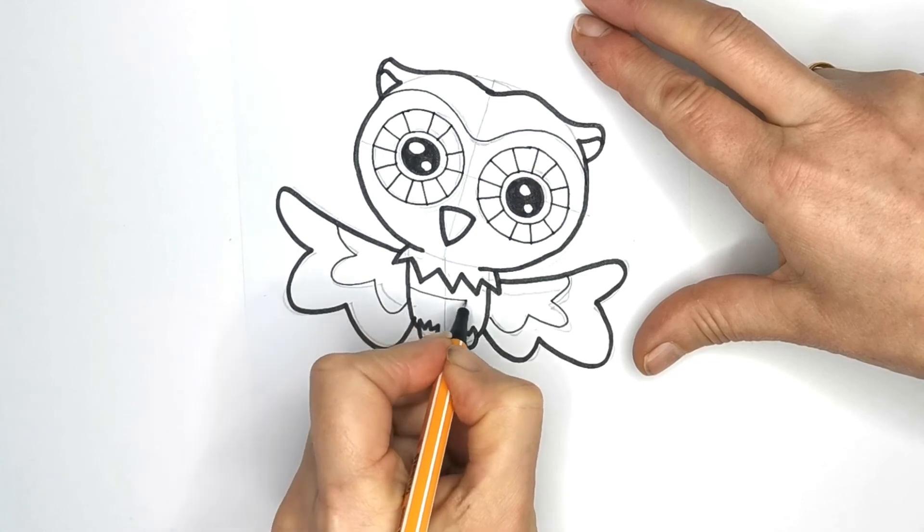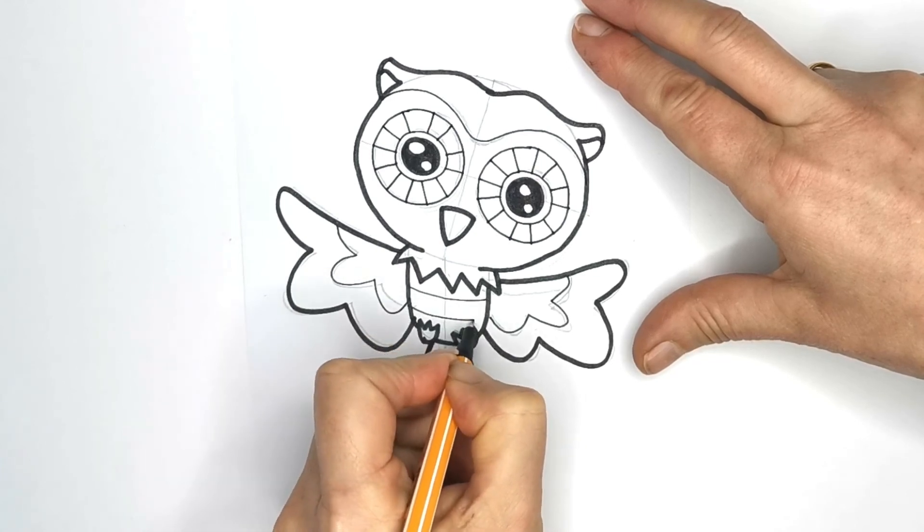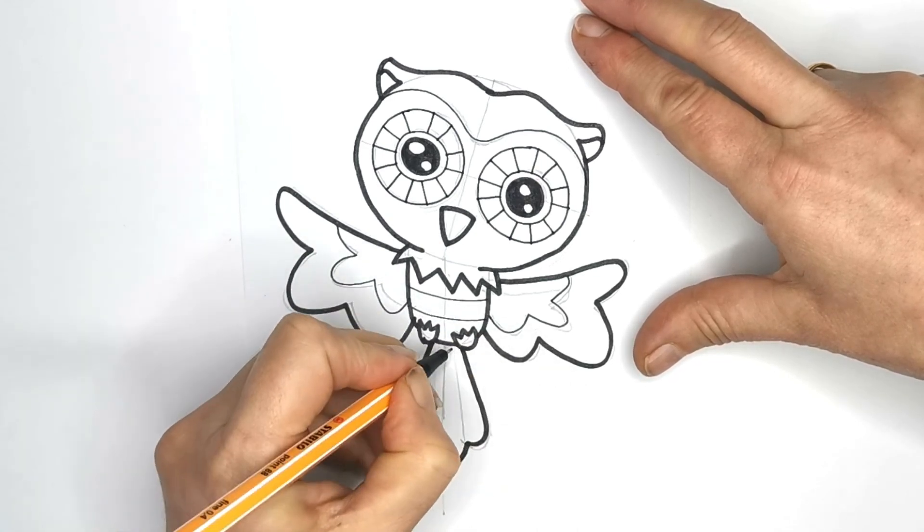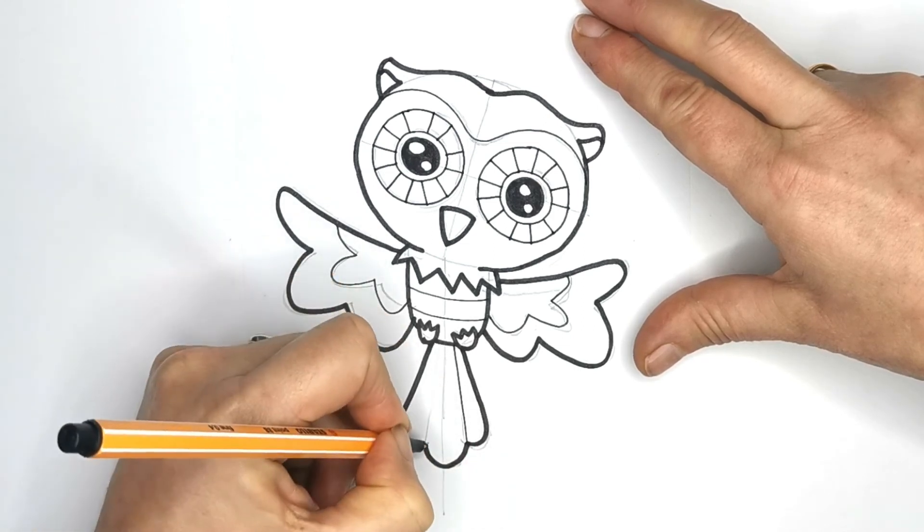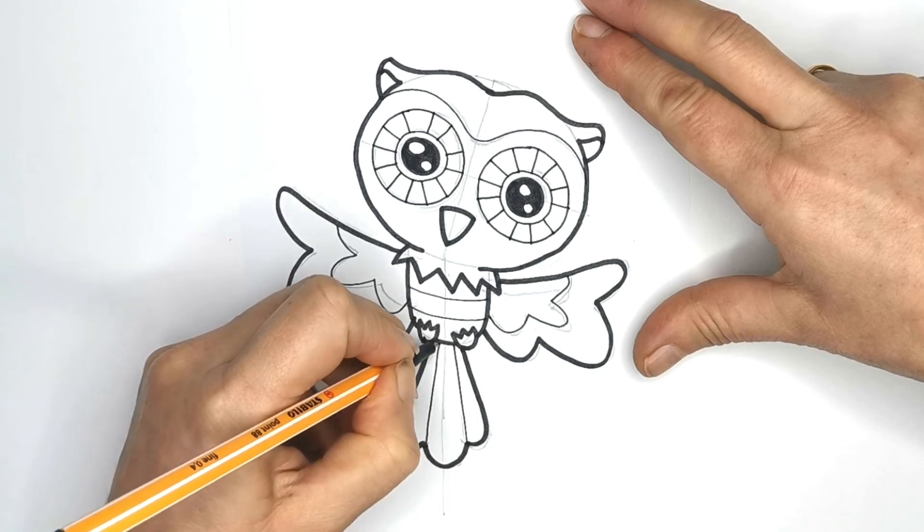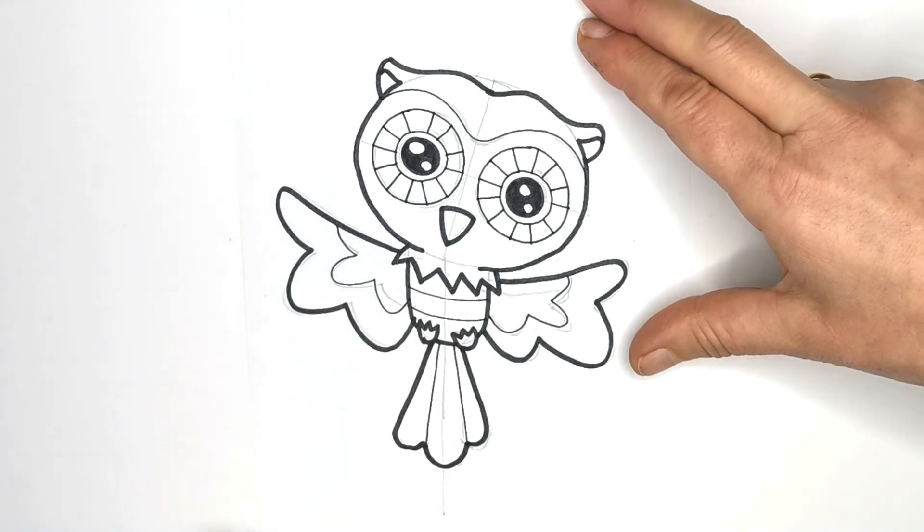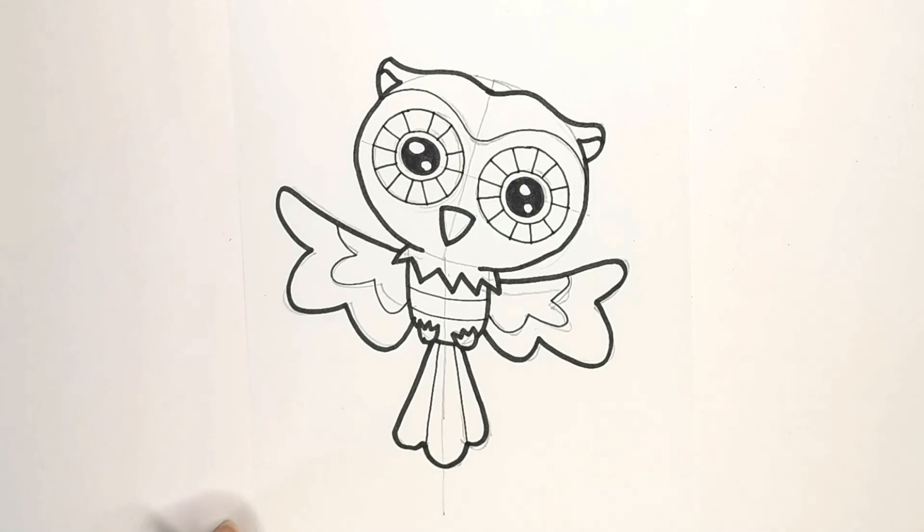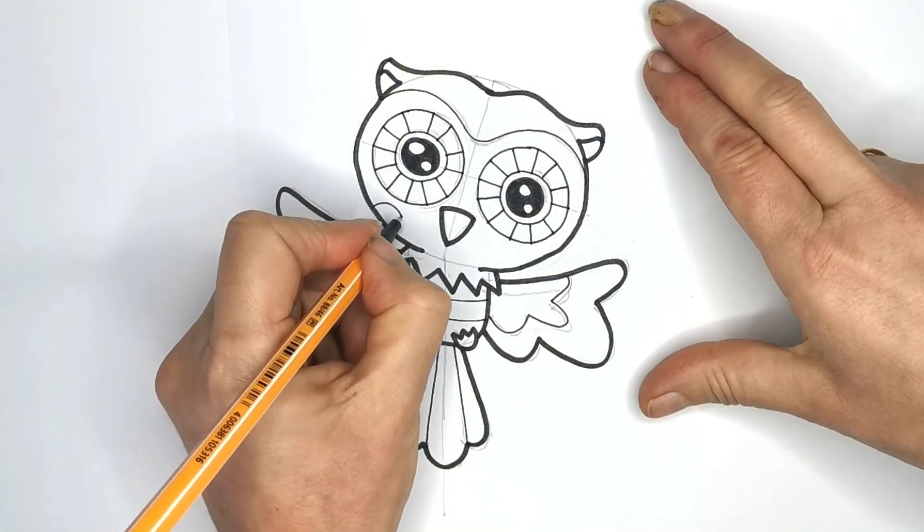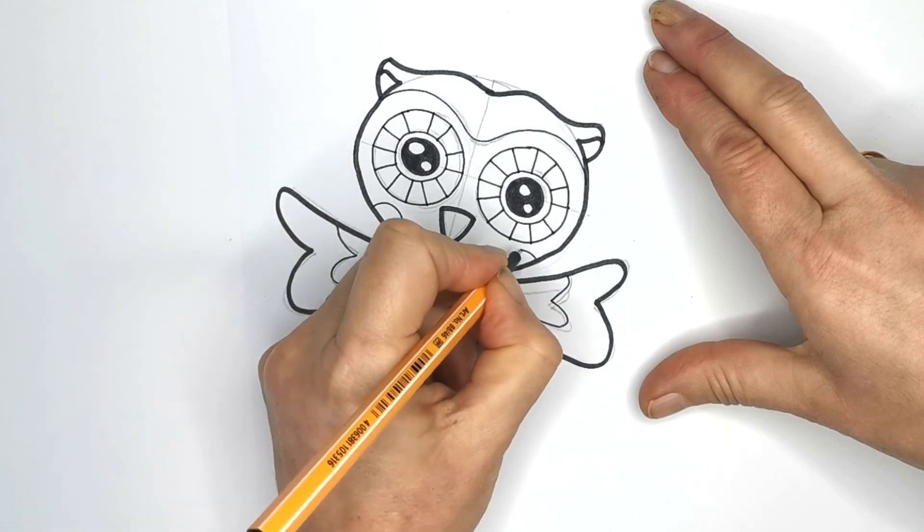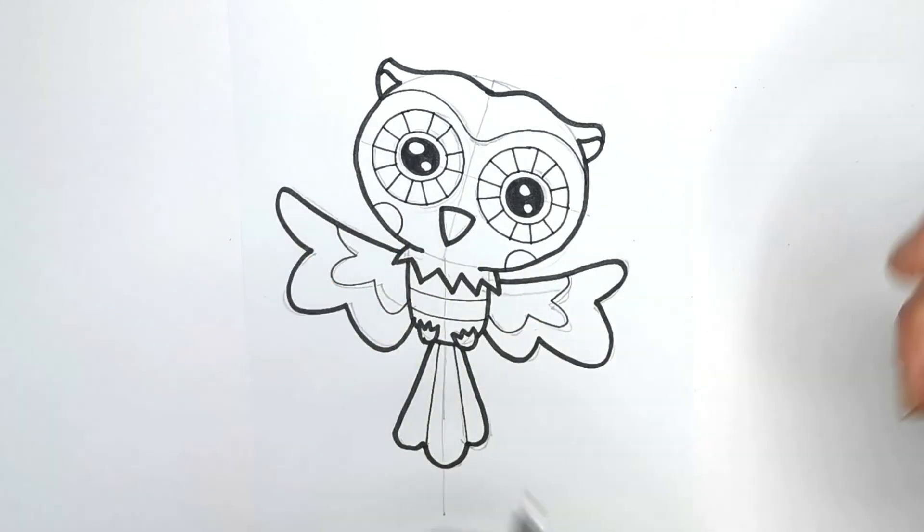There we go. I'm going to give him some stripes on his body. A little bit more interest there. And I'm going to draw down so that we can see the fan feathers of his tail. And there he is. He is pretty much complete. I think I'm going to give him some cheeks. And I think I'll have them coming off the side here like that.